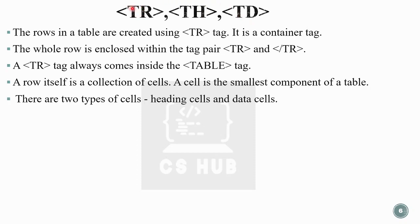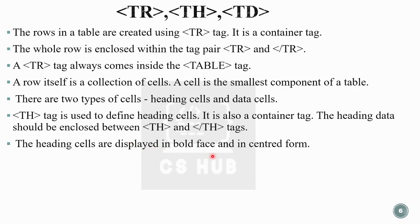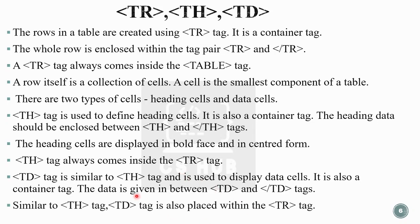There are two types of cells: heading cells and data cells. For heading cells we use th; for data cells we use td. Both th and td are used inside the tr tag. The th tag defines heading cells — it's a container tag, and heading content is displayed in bold and centered form. The th tag always comes inside the tr tag. The td tag is similar to th but used for data cells — it displays normal text, not bold. Data content is placed between opening and closing td tags.